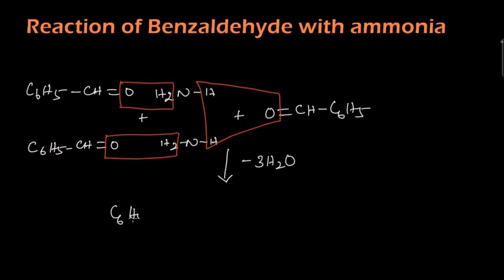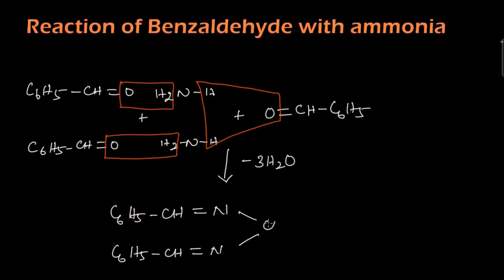The condensed product is: C6H5-CH=N, C6H5-CH=N, and CH-C6H5. The name of this compound is hydrobenzaldehyde.